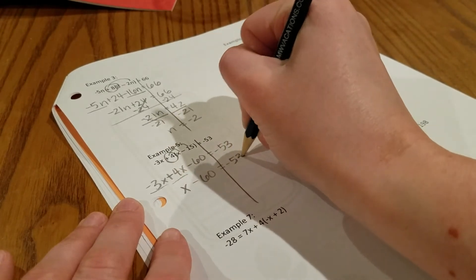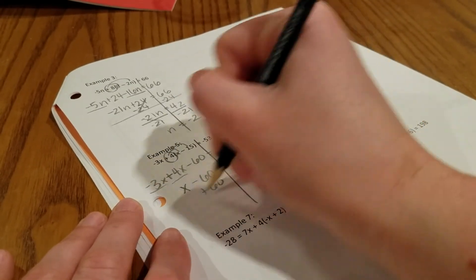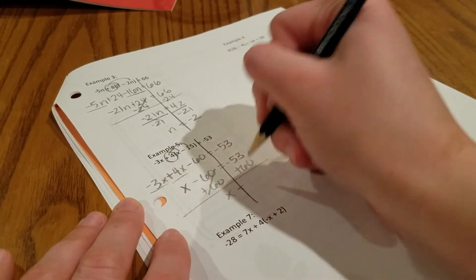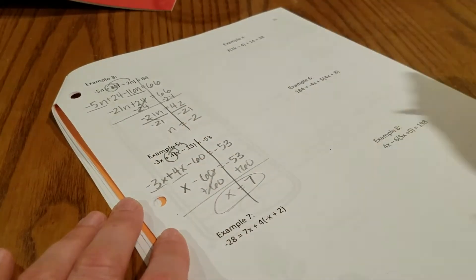So add the 60. On the left you just have x. And you get positive 7.